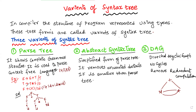In a parse tree, you need to include all grammar productions. The first production is E → E+T. To get id on the left side, since E → T → F → id, we write E → T, T → F, F → id. On the right side, T → T*F, where T → F → id and F → id.